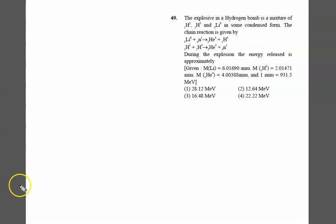The explosive in a hydrogen bomb is a mixture of ¹H², ¹H³, and ³Li in some condensed form. The chain reaction is given, and during the explosion the energy released is approximately calculated. There are two reactions; firstly, we write the reactions separately.